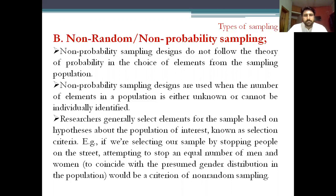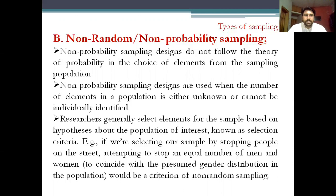Non-probability designs are used when the number of elements in a population is either unknown or cannot be individually identified. At times you are not sure about the elements in a population, or you cannot individually identify everyone. Researchers generally select elements for the sample based upon a hypothesis about the population of interest, known as selection criteria.